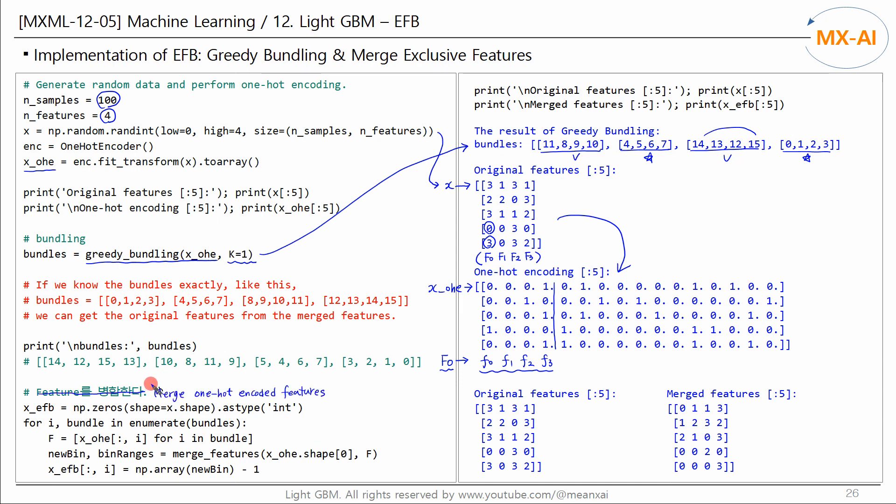Next, we merge the one-hot encoded features into one feature, as seen in the previous page example. Let's use the merge features function. The result is like this. A total of 16 encoded features were merged into four.